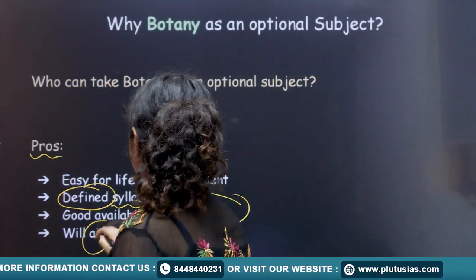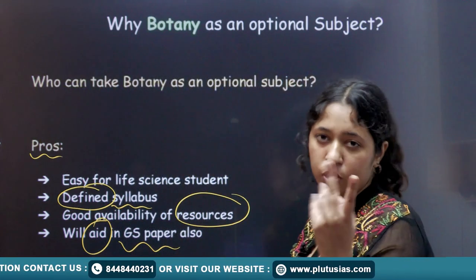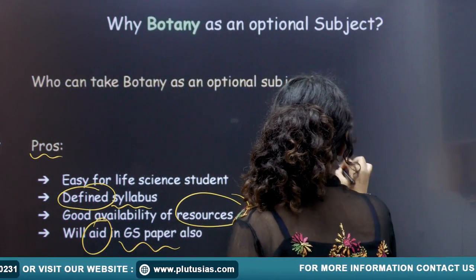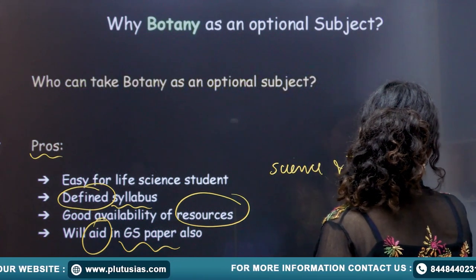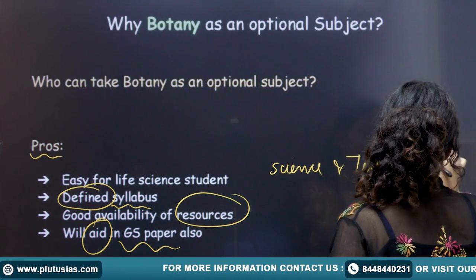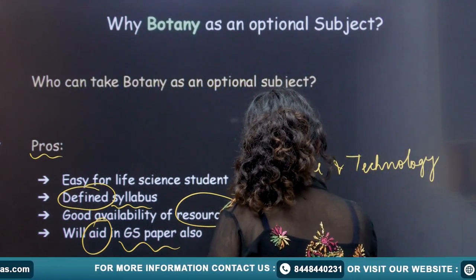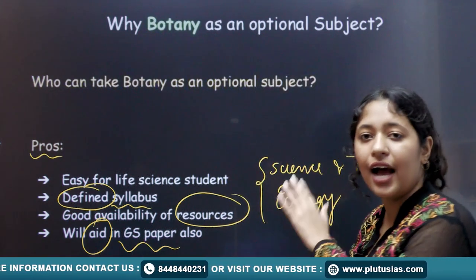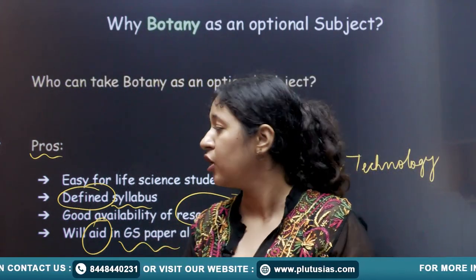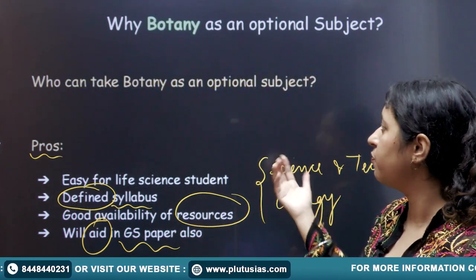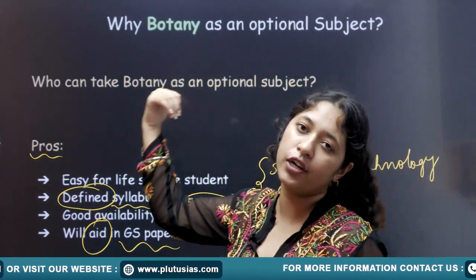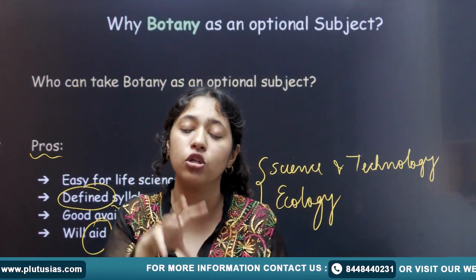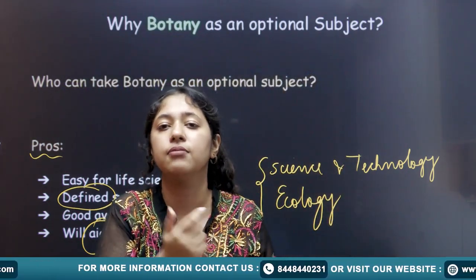The next advantage is that botany will aid in your GS paper. Two subjects overlap: the first is science and technology, and the second is ecology. These are the overlapping topics of botany as well as your GS paper. So covering these two topics will overlap with the preparation of your botany optional — it has a defined syllabus and will also help in your other exams.